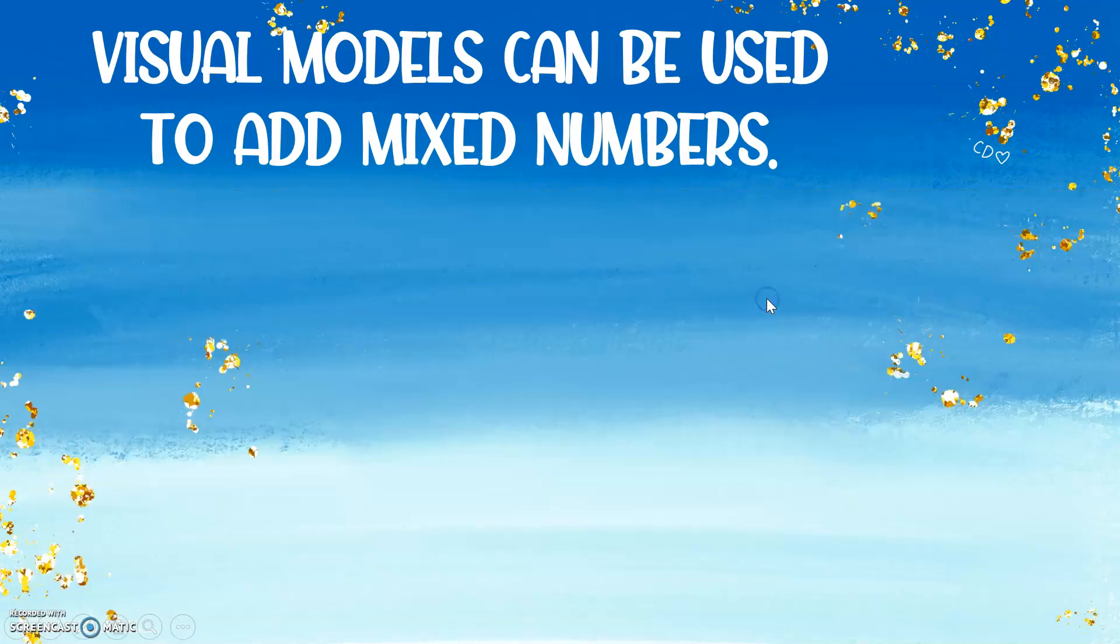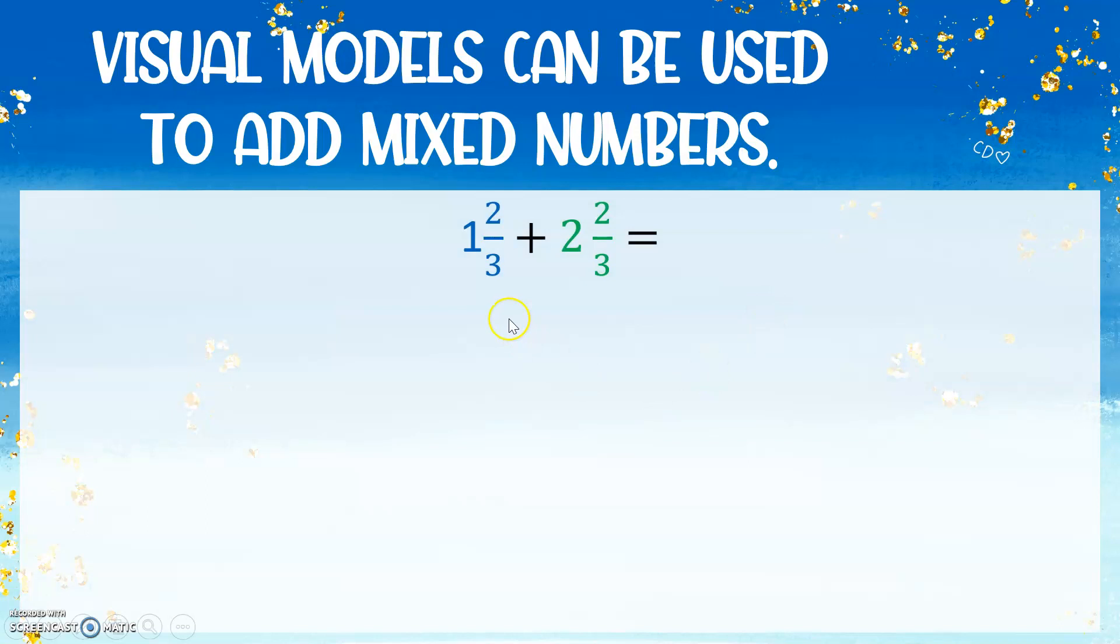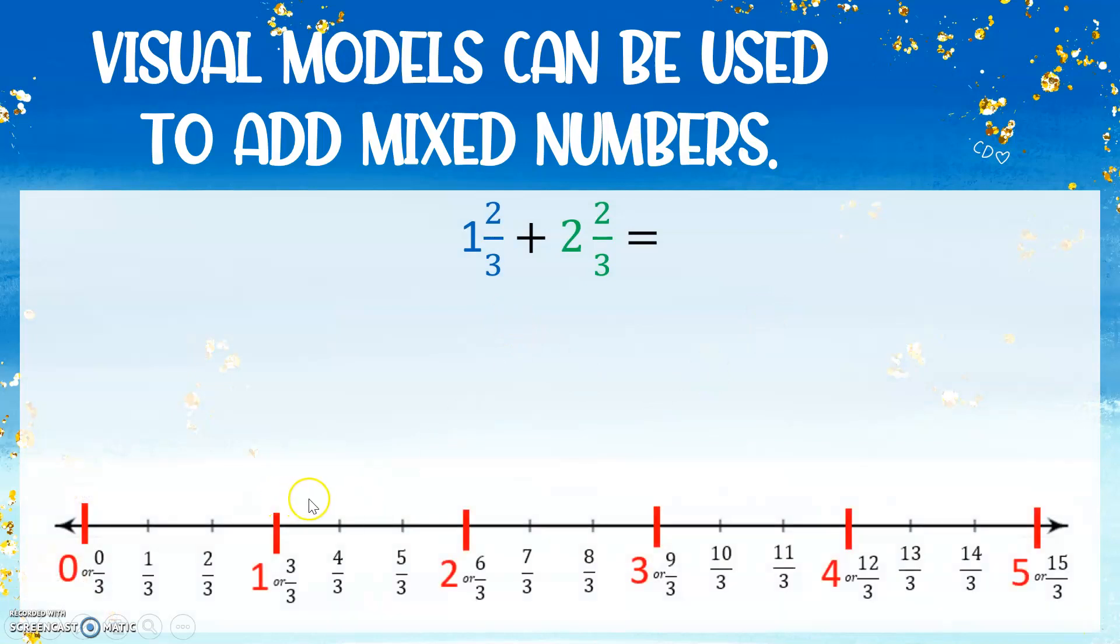Now the other way you could do this is the way I showed you in the first example. So we could add the whole numbers first. So I'm going to have my number line again and this time I'm going to add 1 full jump plus 2 full jumps. So the 1 is from the first addend and the 2 is from the second addend. So we have 1 plus 2 gets us 3. So we know that that's correct.